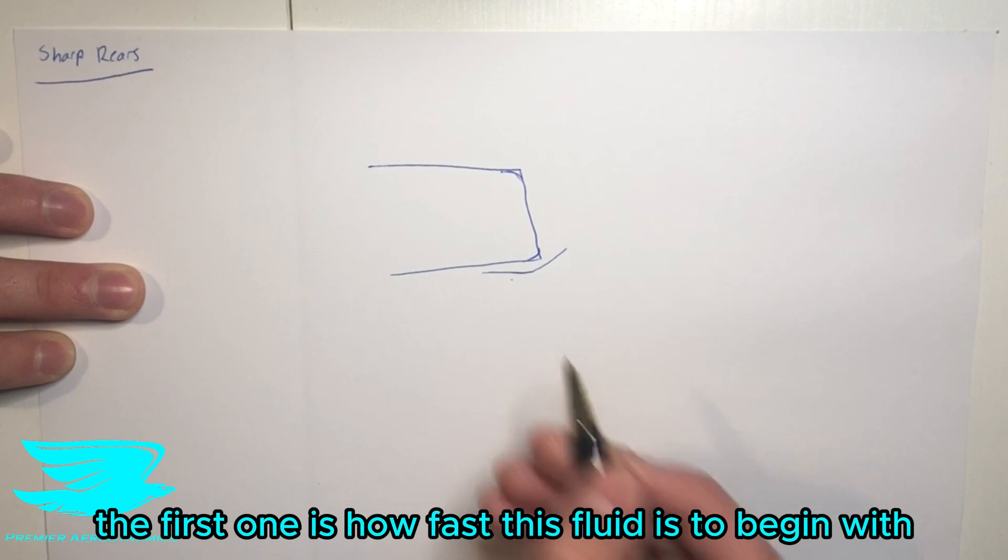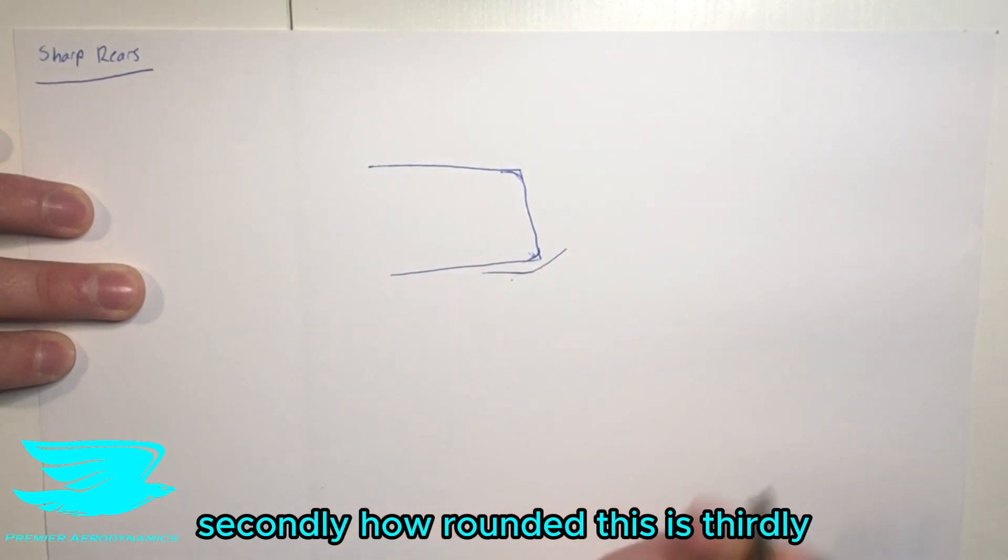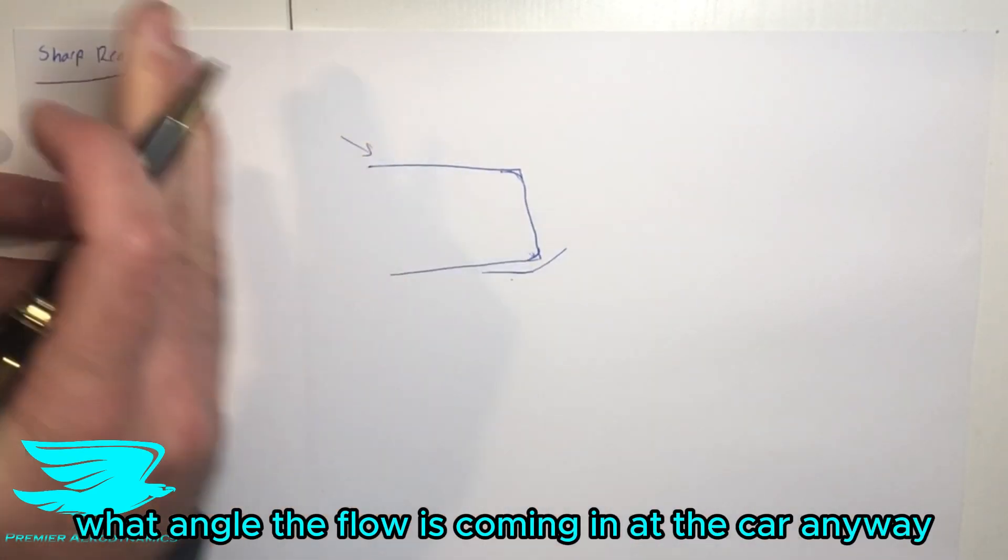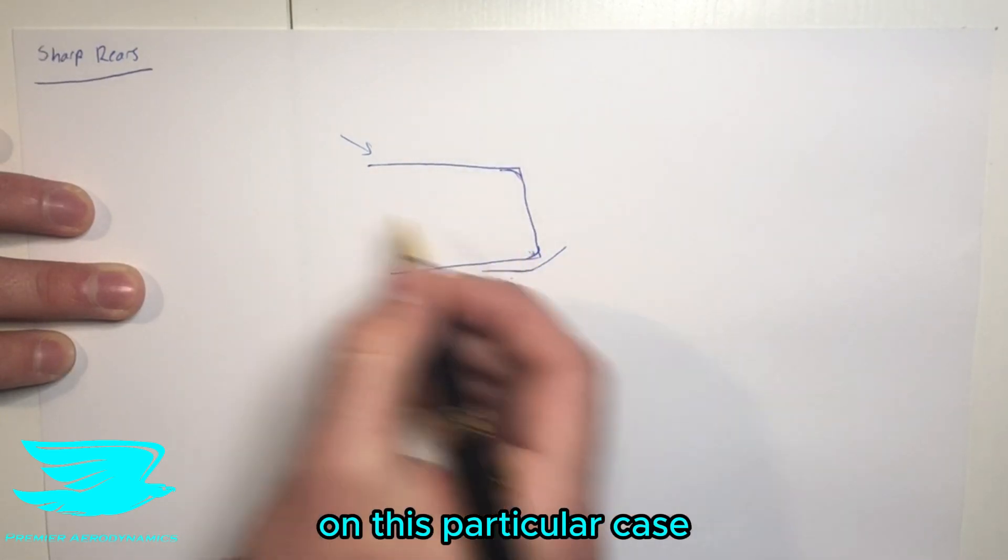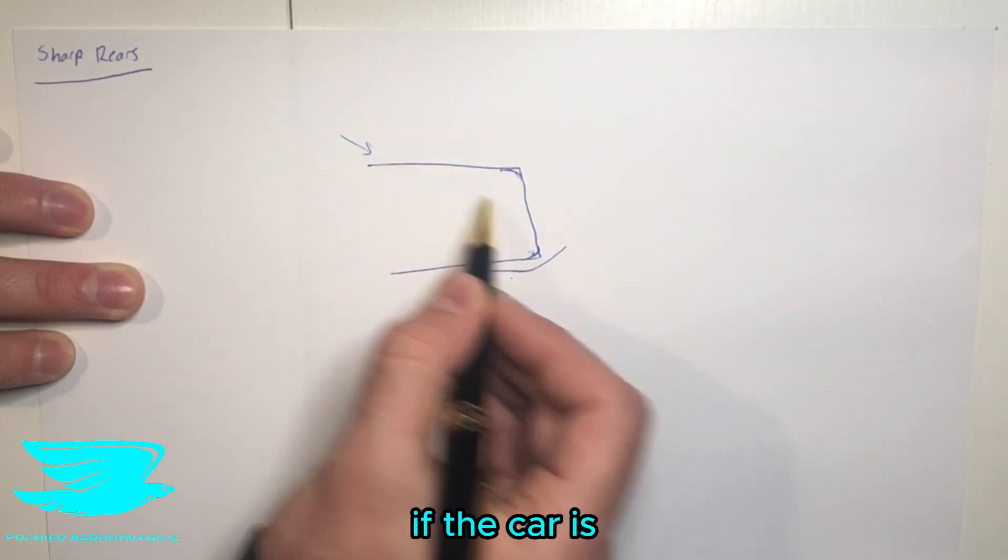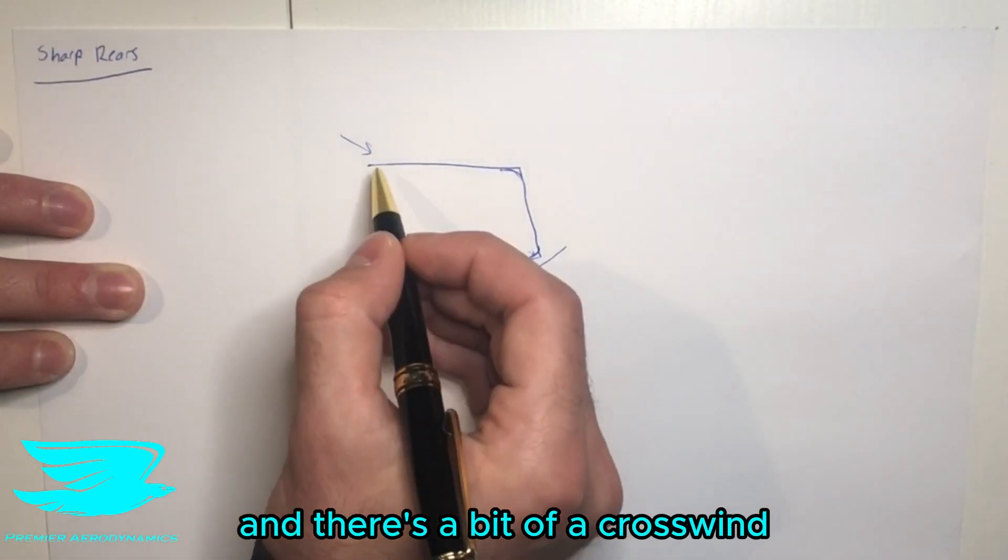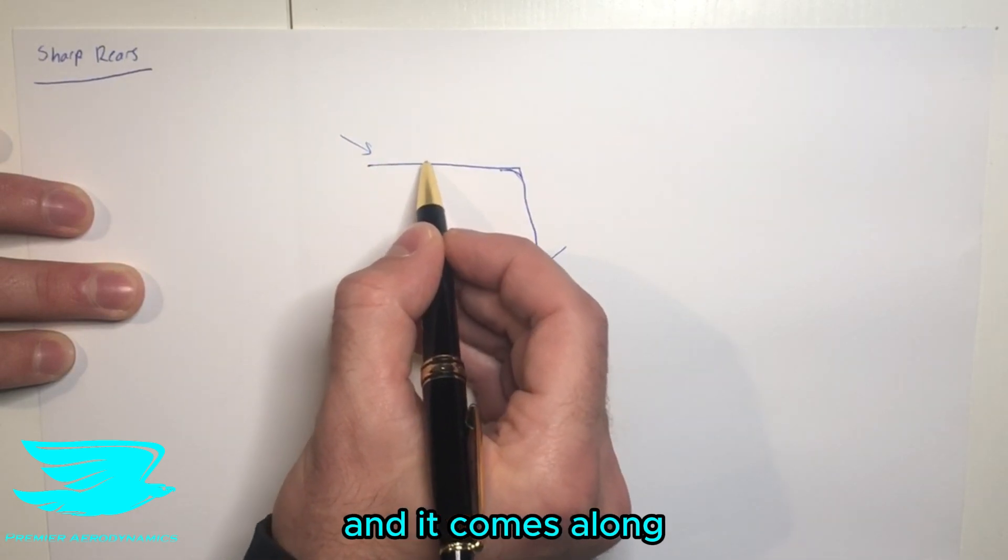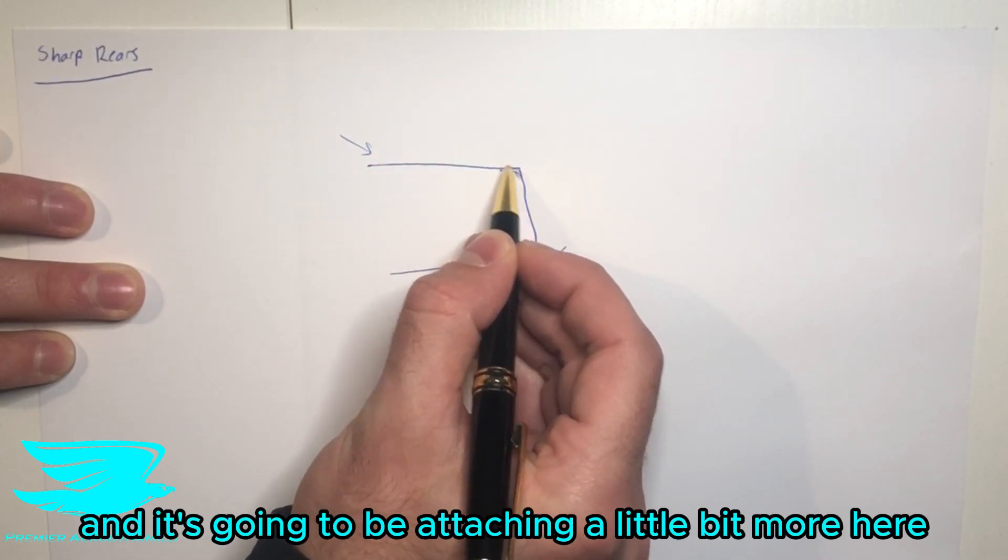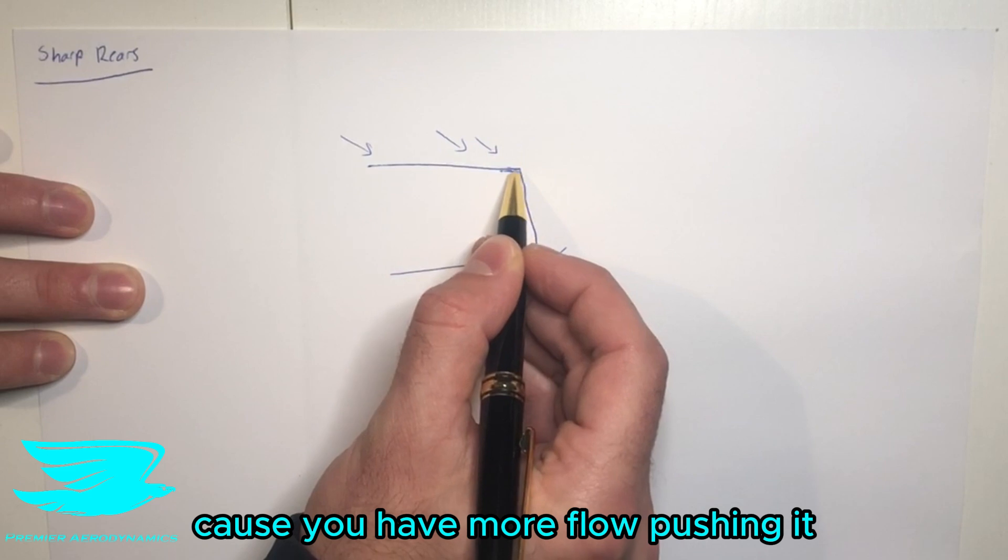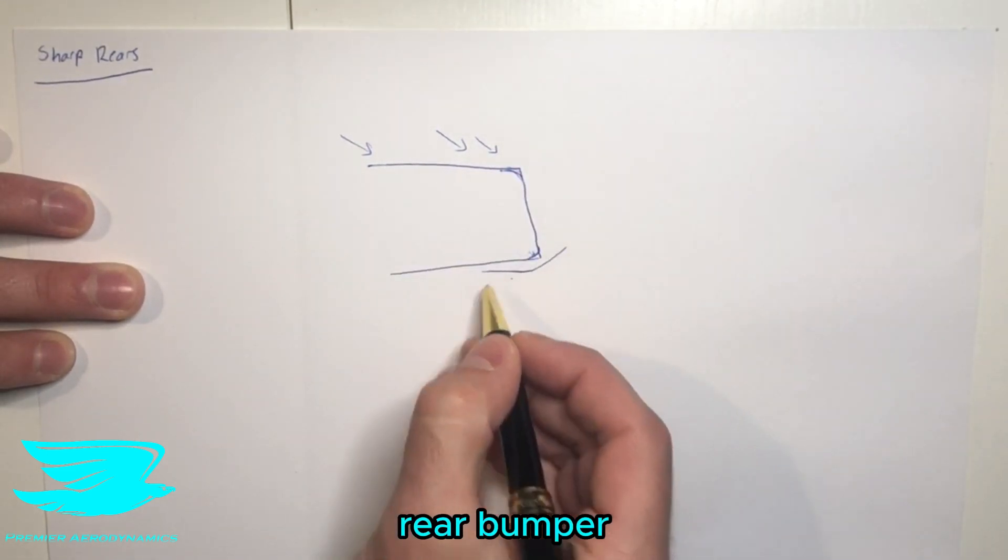So for example, in this particular case, if the car is driving along and there's a bit of a crosswind, the flow is hitting here and then it comes along and it's going to be attaching a little bit more here because you have more flow pushing it onto this rear bumper as opposed to this side, which is in much more of a wake.